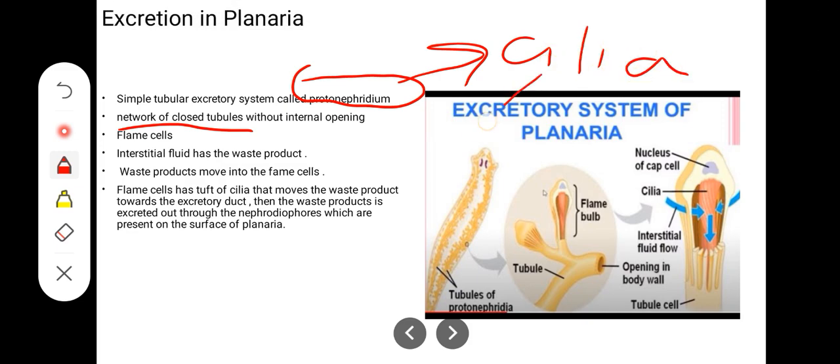This cilia shows movement, which moves the interstitial fluid into the flame cell or tubular system. When the cilia shows movement, it creates a flame-like structure, which we call flame cells. The waste products move from cilia. This is the interstitial fluid entering the flame cells.